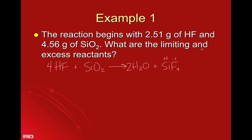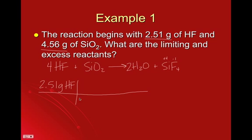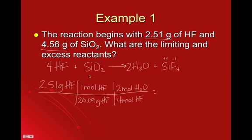To figure out the limiting reactant, take the amount of each reactant and convert it to the same product — I'll convert both to water. So, 2.51 grams of HF: the molar mass of hydrogen fluoride is 20.09 grams per mole. The mole ratio is 4 moles of HF to 2 moles of water. Calculating: 2.51 times 2 divided by 20.09 and 4 gives 0.0625 moles of water.